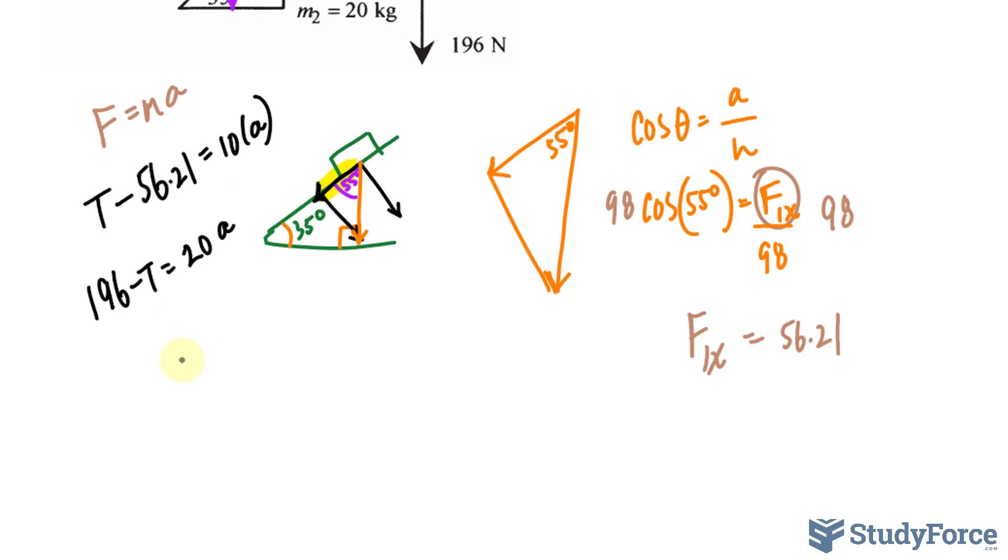This is relatively easy to solve now. It's kind of like a linear system. What I will do is label this as equation one and this as equation two. I'll solve for t here and then substitute that part into this to find out the acceleration.